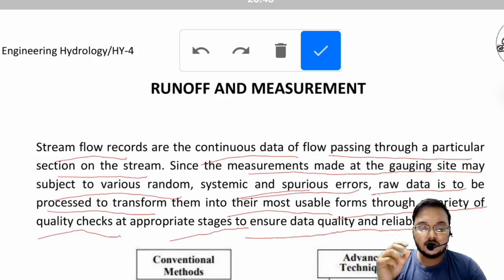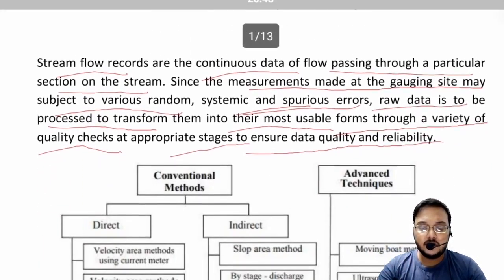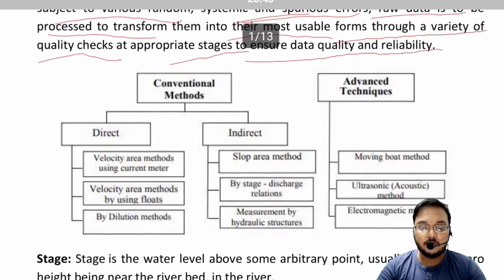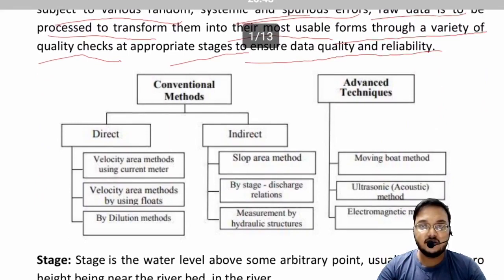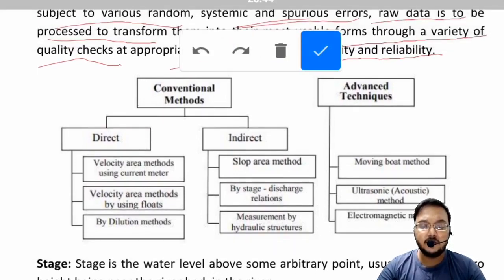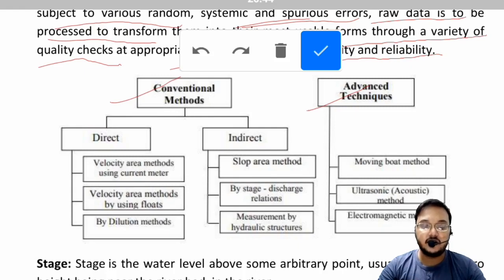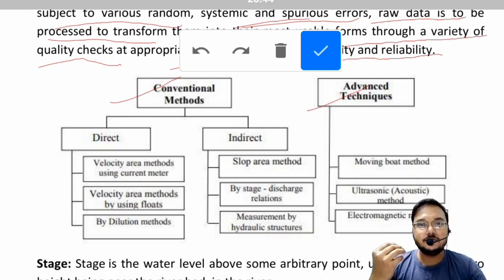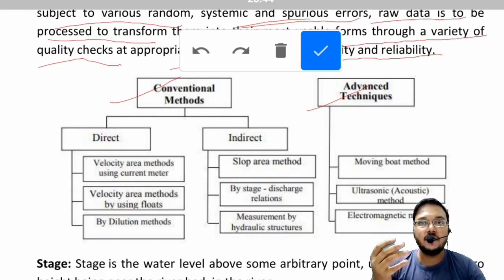This chapter mainly deals with methods of measurement of runoff. There are two main types: conventional methods and advanced techniques. Conventional methods are those which have been used till date and are older known methods, whereas advanced techniques are newly developed ones that may be more convenient and give better and more precise results.